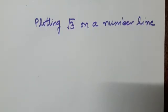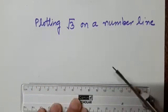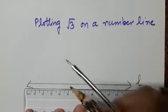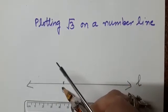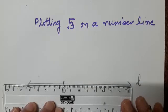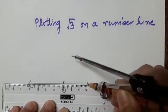Hello dear students, let us now see how we plot square root of 3 on a number line. I hope you have learned how to plot square root of 2 on a number line, and we will be using that knowledge here. First step is we are going to draw the number line. I have taken a line L and marked a point representing 0, and am choosing a suitable unit — let me take 3 centimeters equal to 1 unit.